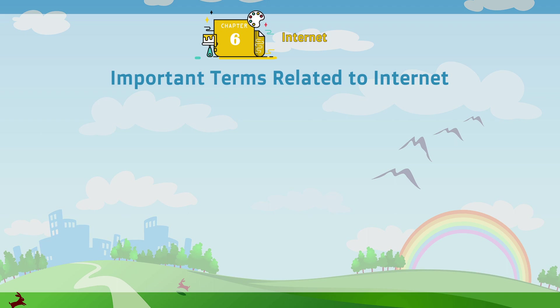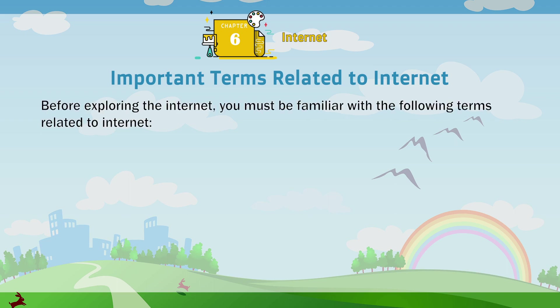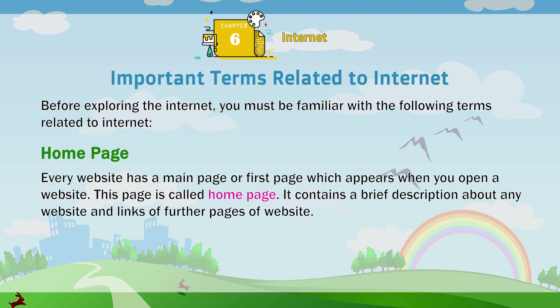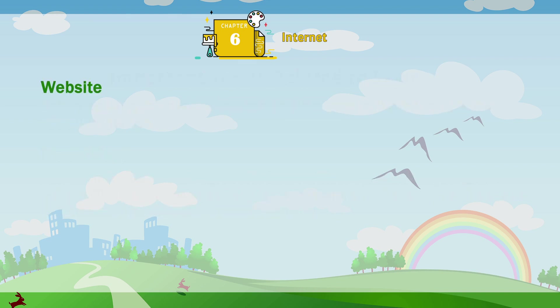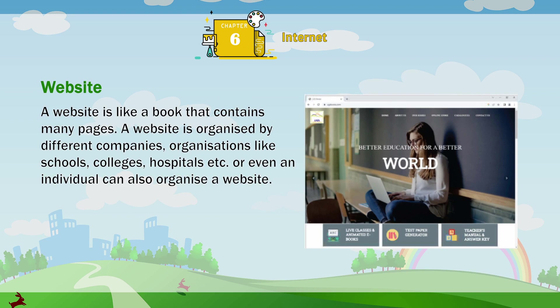Important terms related to internet. Before exploring the internet, you must be familiar with the following terms. Homepage: every website has a main page or first page which appears when you open a website. This page is called homepage. It contains a brief description about the website and links to further pages of the website. Website: a website is like a book that contains many pages. A website is organized by different companies, organizations like schools, colleges, hospitals, etc., or even an individual can also organize a website.